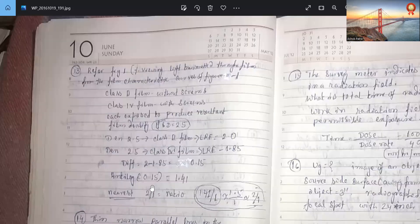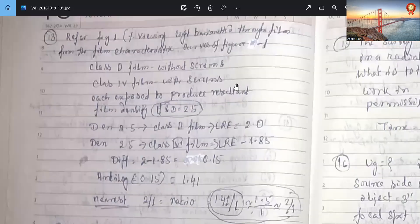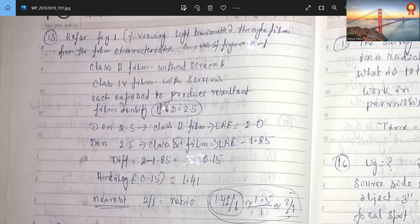Let's see the next one. So refer to the film characteristics in figure 1. Class 2 film without screen. Class 4 film with screen. So there may be two charts or something like that written there, without screen, with screen and all.